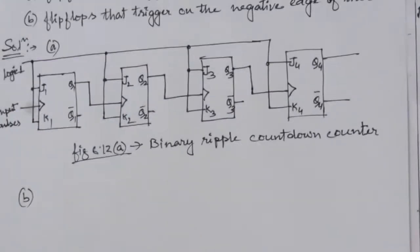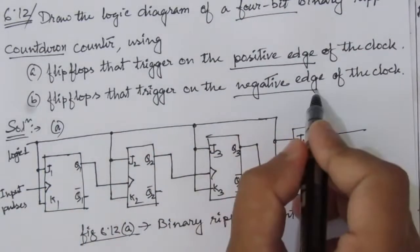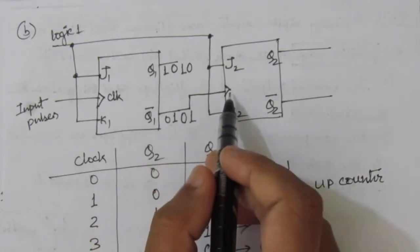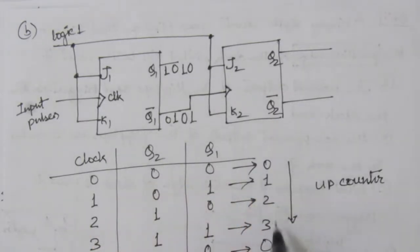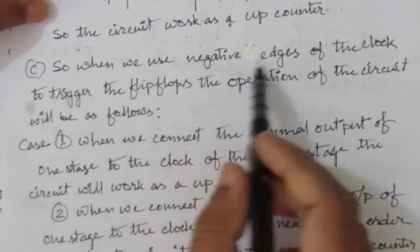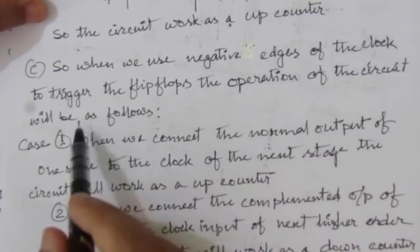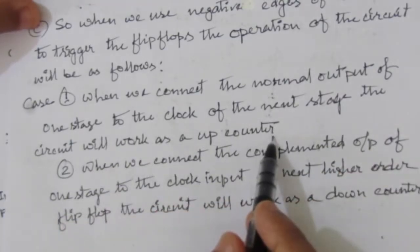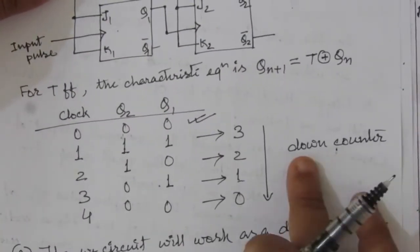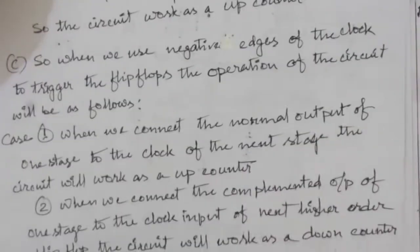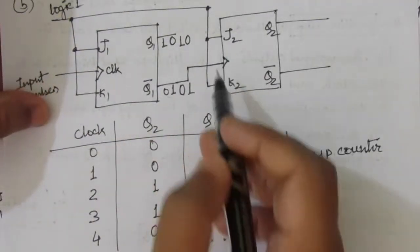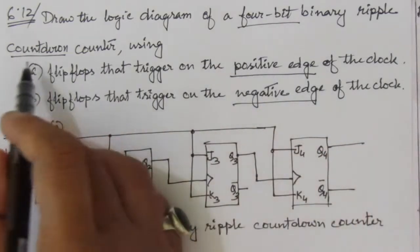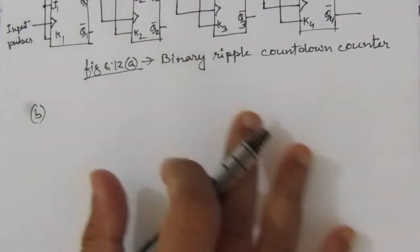Now let us go to Part B. In Part B, we use the negative edge of the clock. In the previous problem 6.11, we saw that connecting the complemented output of the first stage to the clock input of the next stage made it work as an up counter using positive edge triggering. When we use negative edge triggering and connect the normal output to the next clock input, the circuit works as a down counter. So if we put a bubble at the clock input — indicating negative edge triggering — it will work as a down counter, which is what this problem requires.